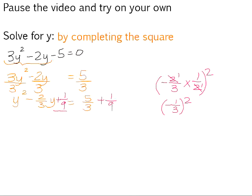So we add positive 1 over 9 to both sides. We can now factorize on the left-hand side. We've created a perfect square, so it will factorize into y minus 1 over 3, all squared. And 5 over 3 plus 1 over 9 is 16 over 9.